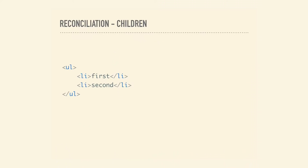Remember how I mentioned that elements have that key attribute and it's useful for differentiating between children? Let's take a look. In a simple unordered list with two list items, if I add an item to the end, React compares the previous first item to the next first item, sees they're the same, then second to second — same — and then it sees the old doesn't have a third, the new does, so it inserts a third item. Pretty straightforward.